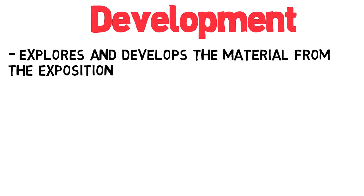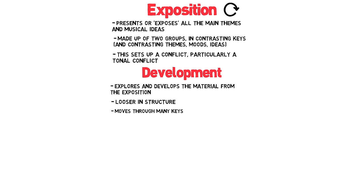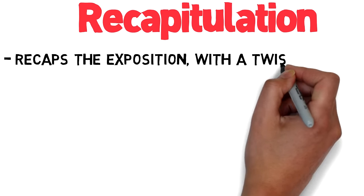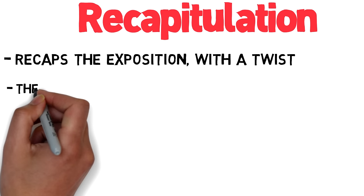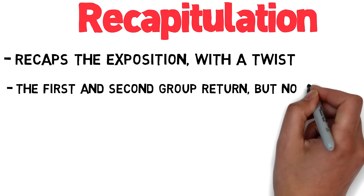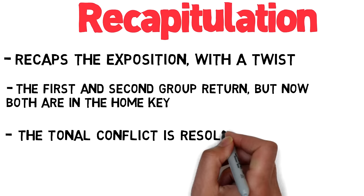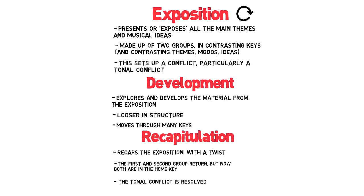Then there's the development, which explores and develops the material we've heard in the exposition. This is usually more discursive and looser in structure, and will move through many keys. And finally, we get a recapitulation, which literally recaps the exposition, but with a twist. Things are the same in some ways, but in other ways crucially different. For example, the first and second group will return, but now both will be in the home key, and so the tonal conflict from the exposition is resolved.